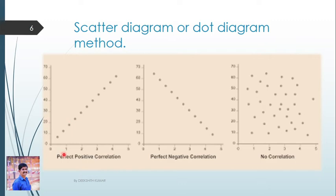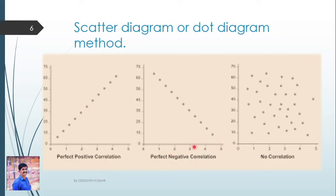If the scatter diagram shows points forming an upward moving straight line, it is called Perfect Positive Correlation. For perfect positive correlation, the correlation coefficient R is always equal to plus 1. If the diagram shows points forming a downward sloping straight line, it is called Perfect Negative Correlation. For perfect negative correlation, R is always equal to minus 1.